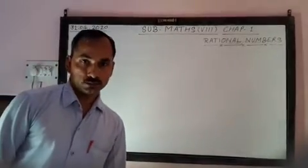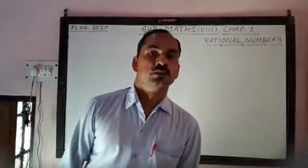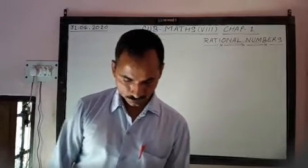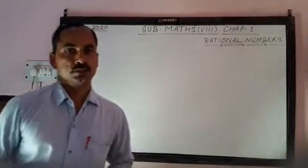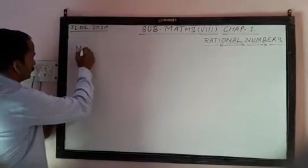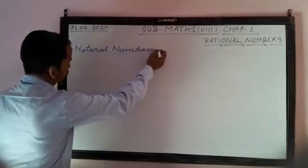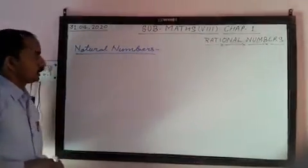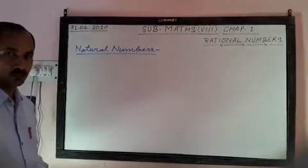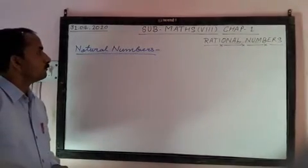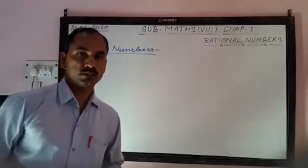To know the rational numbers, first of all we need to know something about natural numbers, whole numbers, etc. You've studied this in pre-classes as well. About natural numbers, as you know from the given words, natural numbers means it is related to nature. The definition of the natural number is that all counting numbers are called the natural numbers. We've studied the group of natural numbers in previous classes.